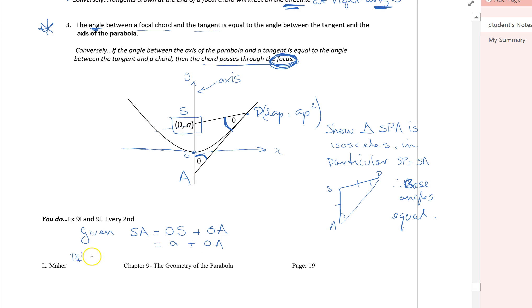Point A is where the tangent cuts the y-axis. The equation of the tangent is, and this is one of your previous properties, y equals Px minus AP squared. Therefore, when x is equal to 0...